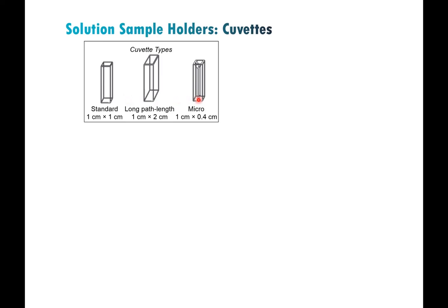Long path length cuvettes, for example two centimeters in one direction, are more useful for absorption measurements if the solution needs to be very dilute or is very weakly absorbing — by increasing the path length you'll get higher absorbance. That can also help in luminescence measurements if a sample has a really weak absorption cross-section. For precious samples like biological samples where you don't have a lot of material, there are micro cuvettes which have the same path length but are shortened — essentially a double-walled cuvette with a little slit in the middle that you fill with solution.